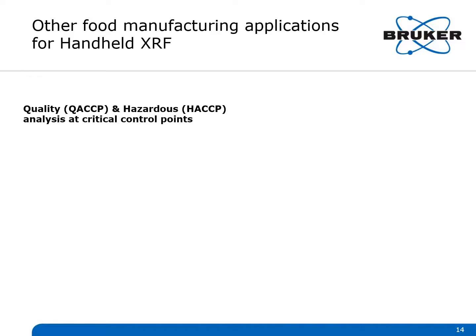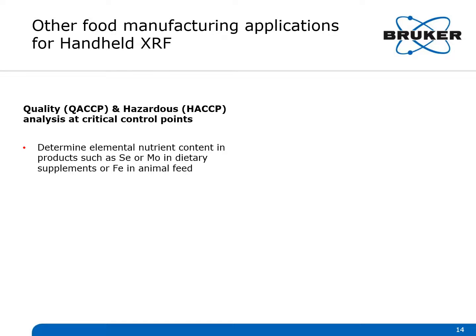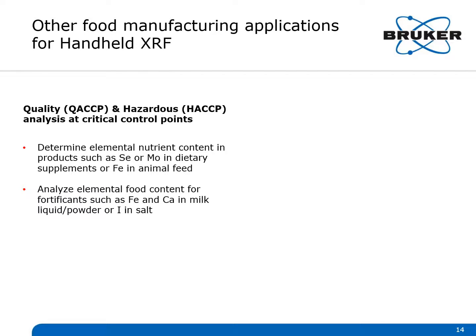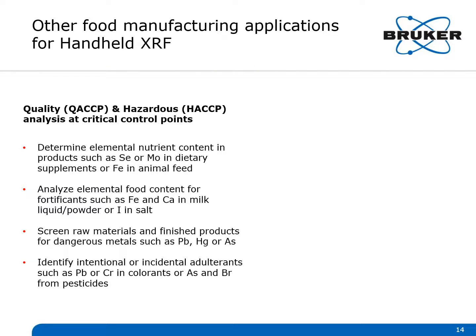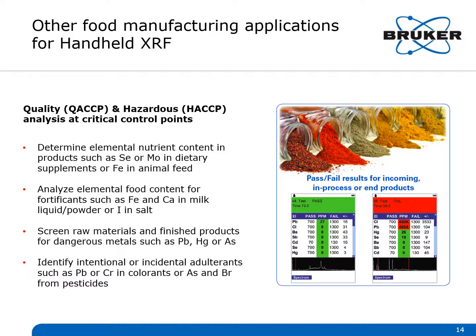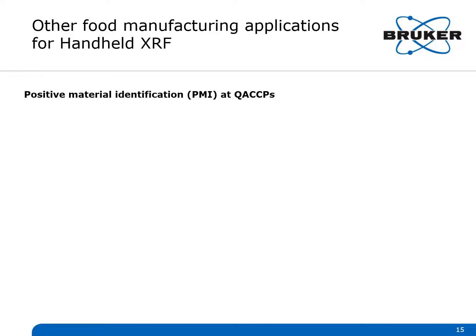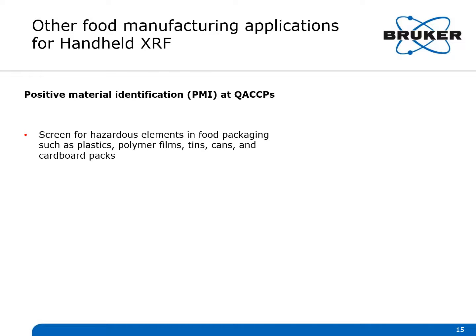There are other food safety applications handheld XRFs work well for. You can determine elemental nutrient content in products such as selenium or molybdenum in dietary supplements, or iron in animal feed. You can analyze elemental food content for fortifications such as iron and calcium in liquid or powdered milk, or iodine in salt. You can screen raw materials and finished products for dangerous elements such as lead, mercury, and arsenic. You can also identify intentional or incidental adulterants such as lead or chromium in colorants, or arsenic and bromine from pesticides. Threshold concentrations can be programmed into the analyzer to indicate simple pass or fail results on the handheld screen. Additionally, you can screen for hazardous elements in food packaging such as plastics, polymer films, tin cans, and cardboard packs.